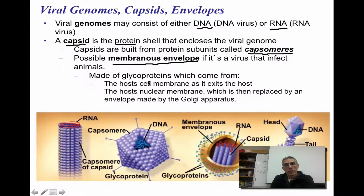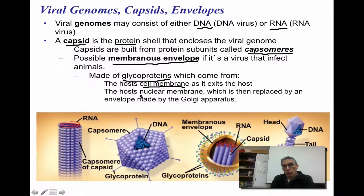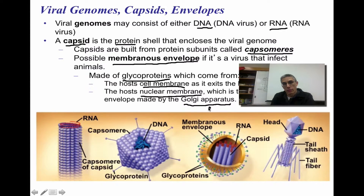These membranous envelopes are going to be constructed of a special protein called a glycoprotein. These glycoproteins are either going to come from the host cell membrane, or they could actually come from the nuclear membrane within the host, and then that particular membrane is going to be replaced by an envelope made by the Golgi apparatus within that cell.